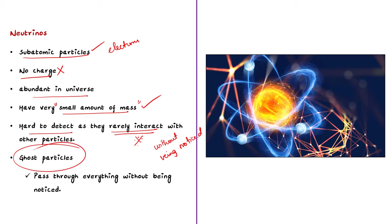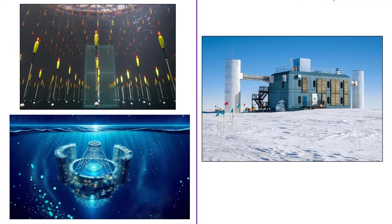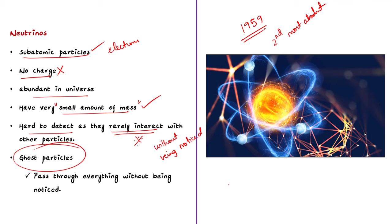Neutrinos were first discovered in 1959 and they are the second most abundant particle in the universe after the photon. Now, what are the sources of neutrinos? Radioactive decays can produce neutrinos. Natural nuclear reactions in the sun and stars produce neutrinos. Even artificial nuclear reactions in nuclear reactors can release neutrinos. Neutrinos are also produced in supernovas.